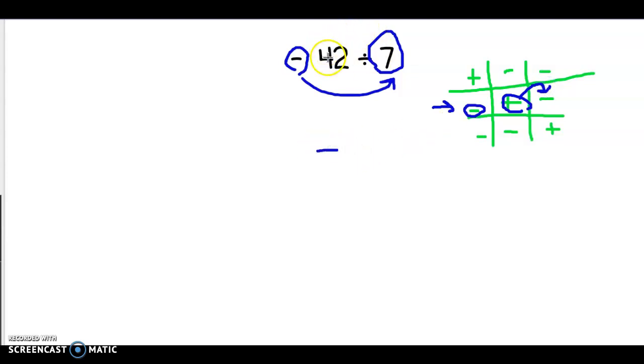Now we have to look at the numbers. 42 divided by 7 is 6 because 7 goes into 42 six times, so that works.